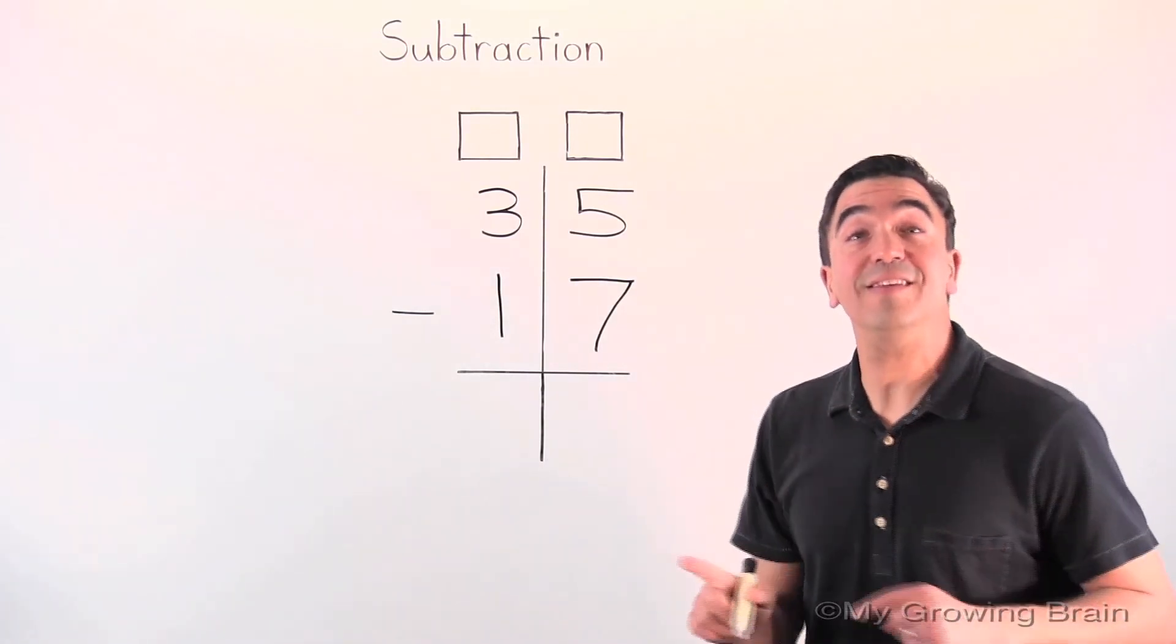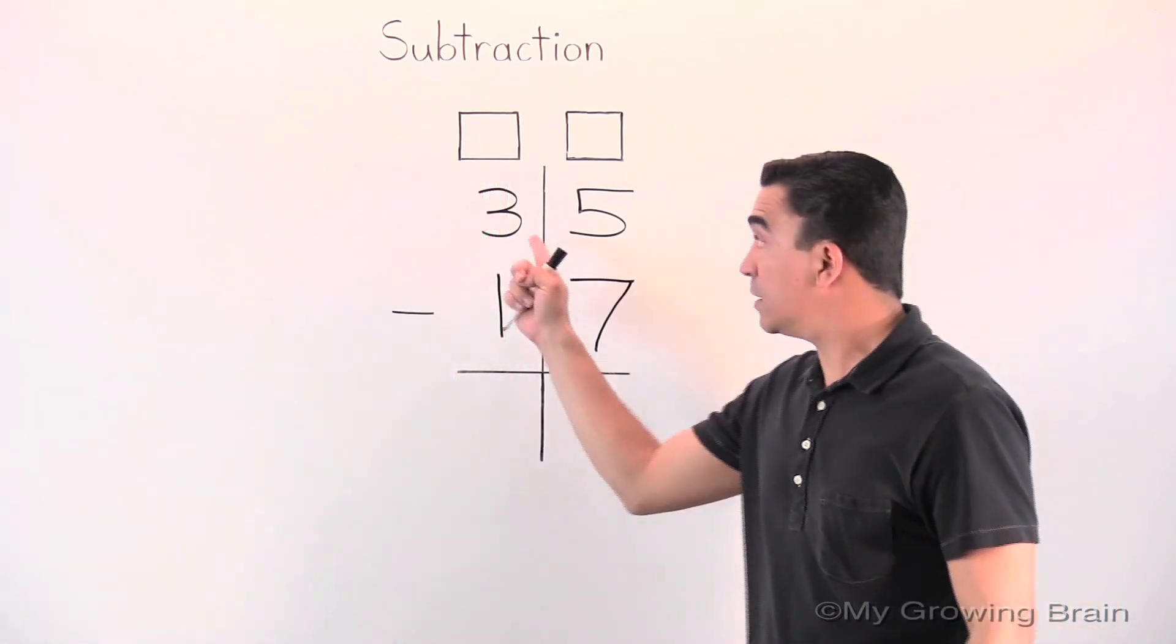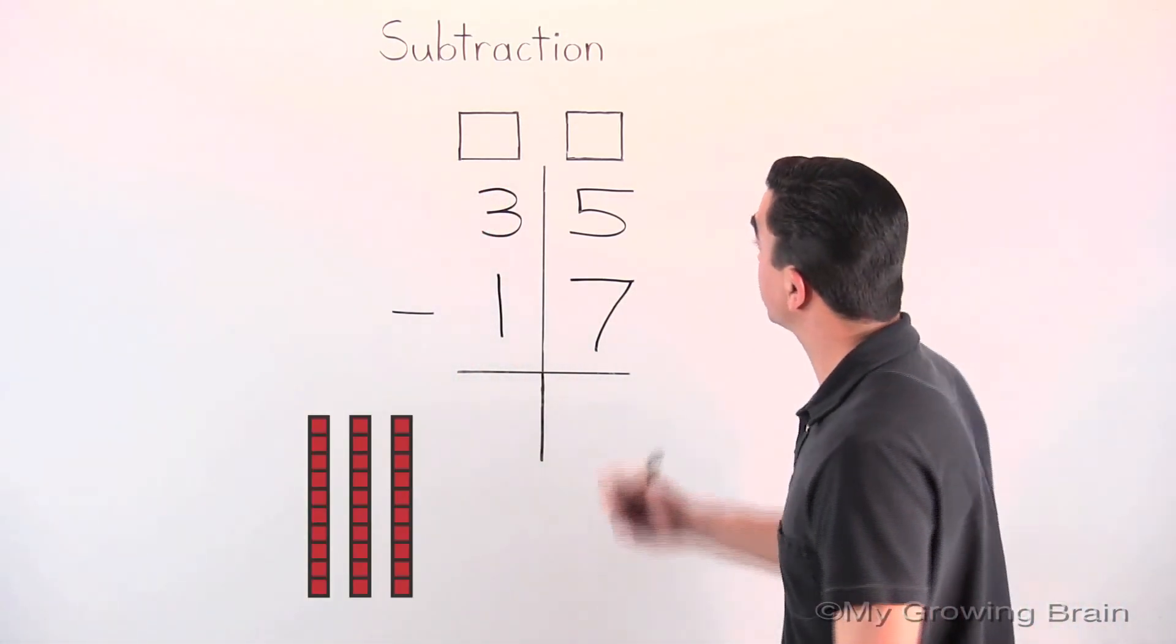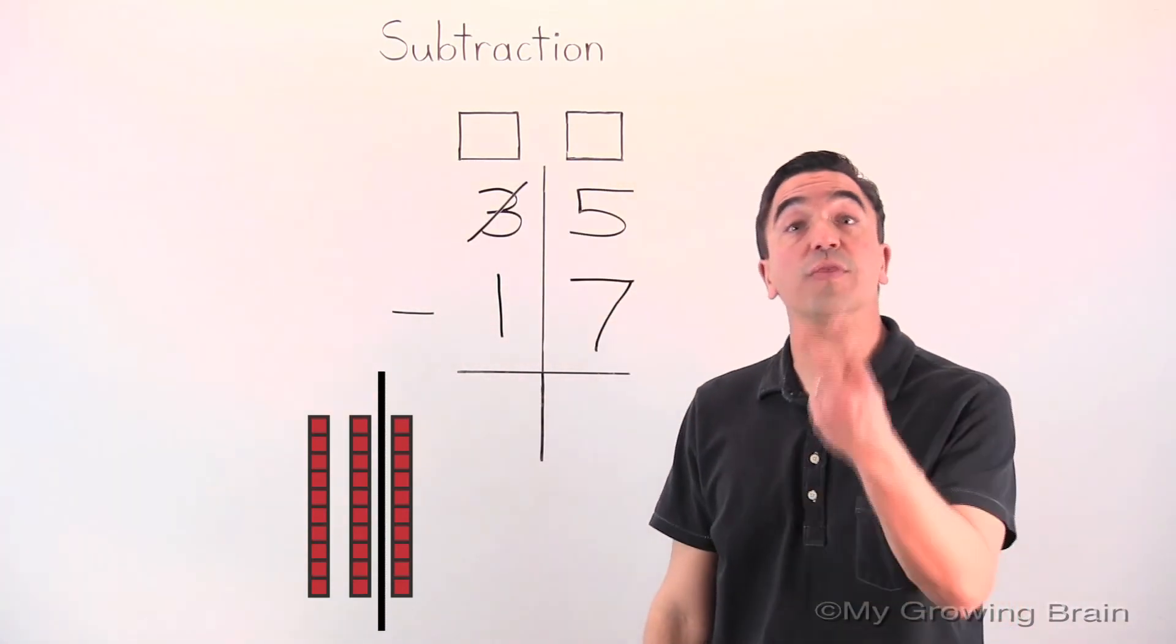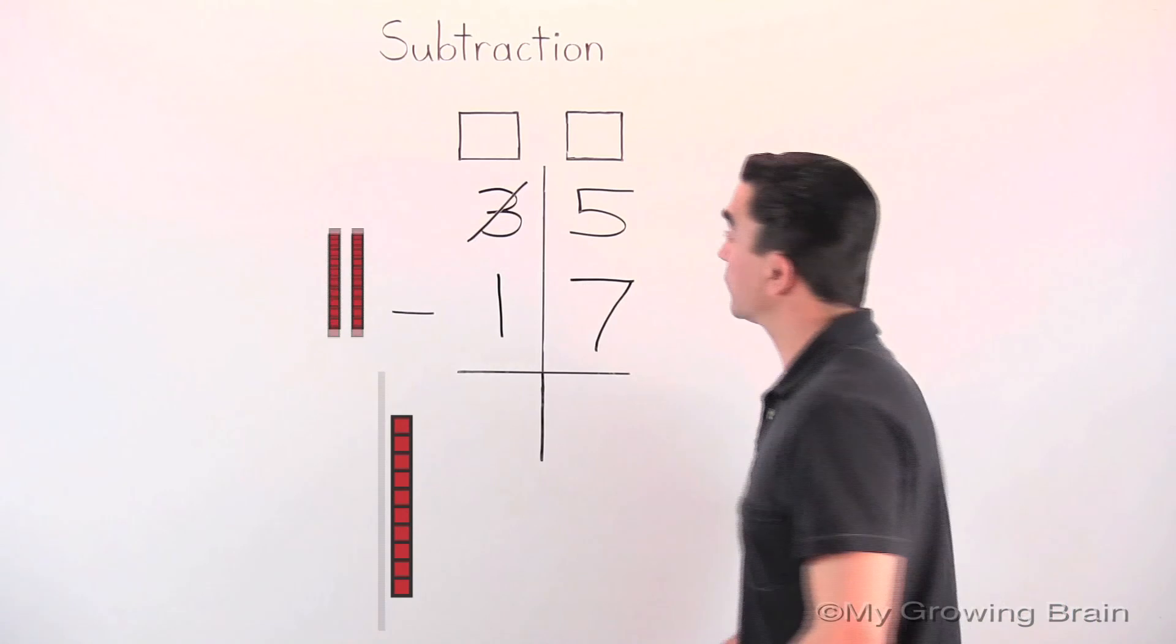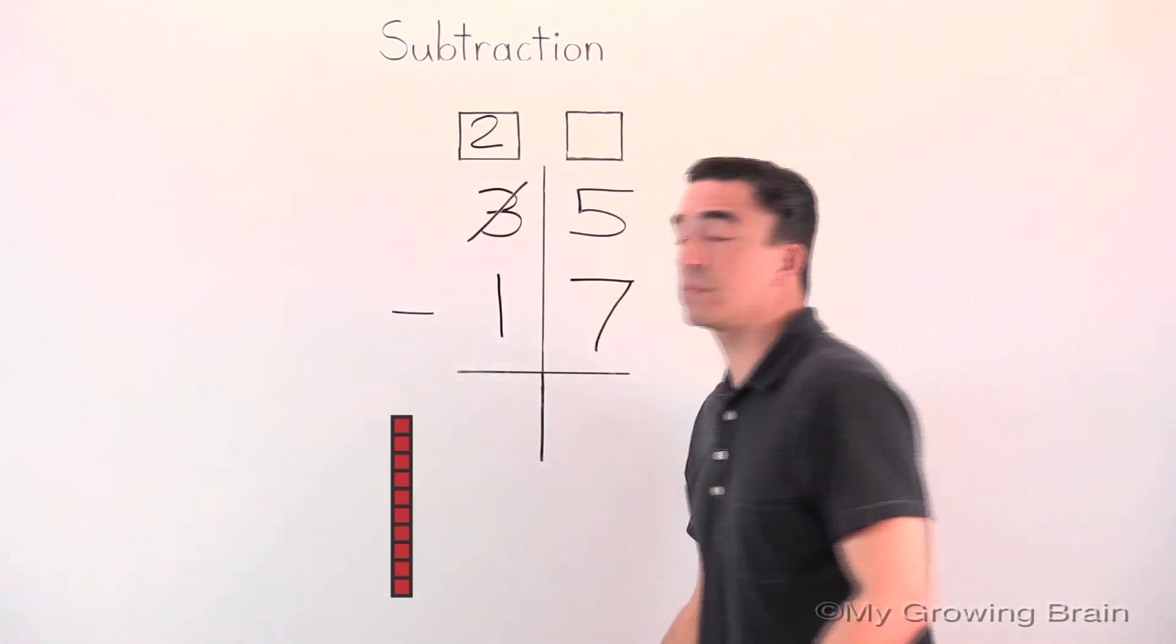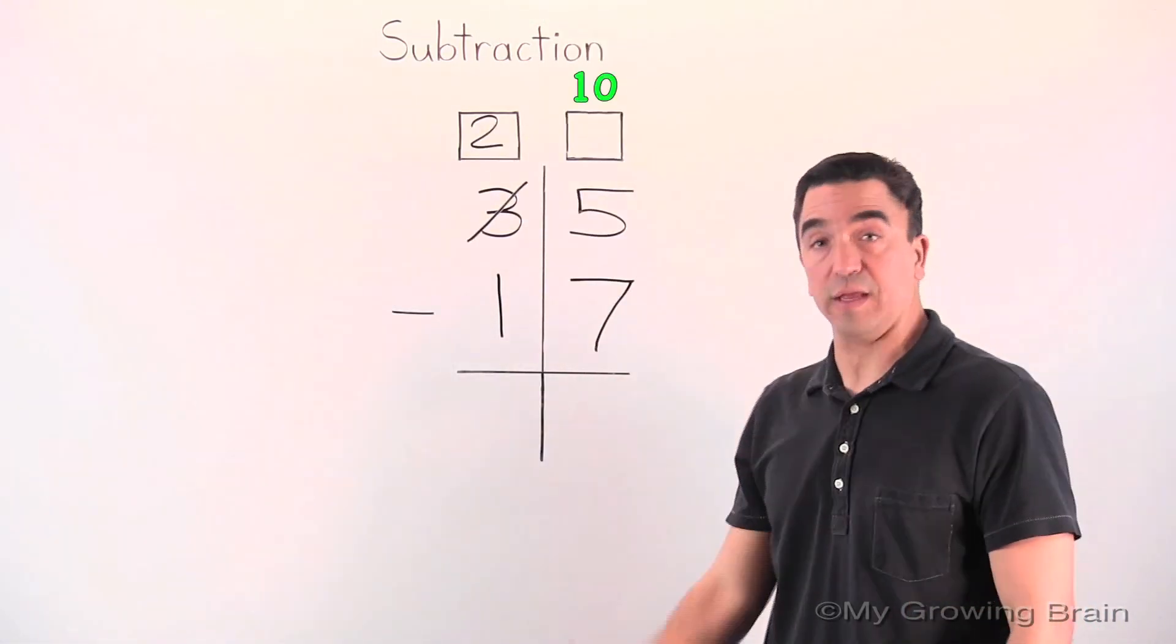So let's move into the tens place. Let's take one of these three tens. That leaves us with two tens. I will put the two in the regrouping box. The other ten I will bring into the ones place.